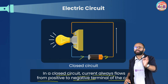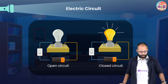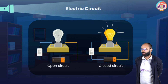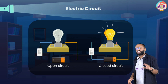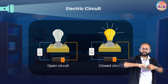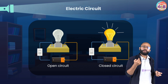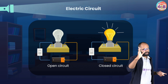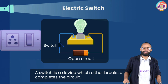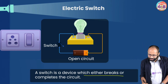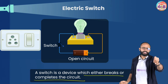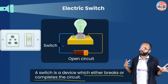When the circuit is open, current will not flow. When the circuit is closed, current will flow. If you want to turn the bulb off, you can't cut and rejoin the wire repeatedly, so you need a device that can open or close the circuit easily — that's the switch. An electric switch is a device which either breaks or completes the circuit. Switch on means circuit closed; switch off means circuit open.